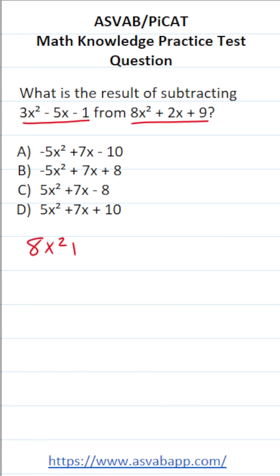We have 8x squared plus 2x plus 9, and from that we're subtracting this entire polynomial. So we have to use a set of parentheses. And it's going to be 3x squared minus 5x minus 1.